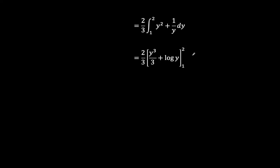And so substituting in the limits, that amounts to 2 over 3 for the first component, this is 2 cubed over 3, which is 8 over 3, minus 1 cubed over 3, which is a third, plus log 2 minus log 1. So this one here, as we know, tends to 0,